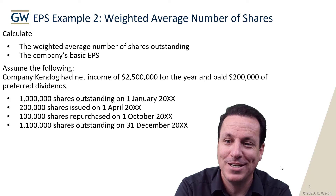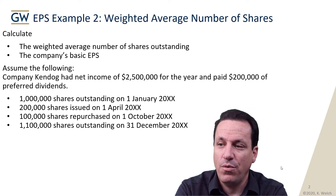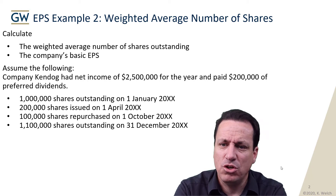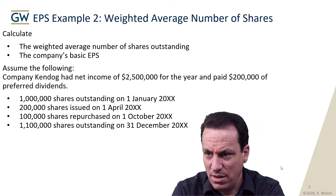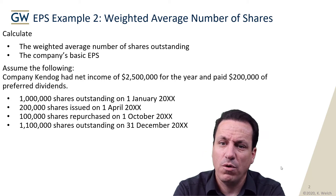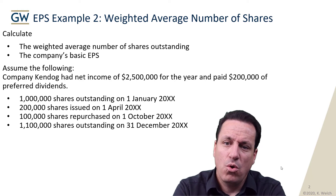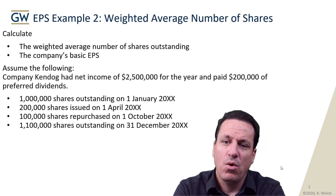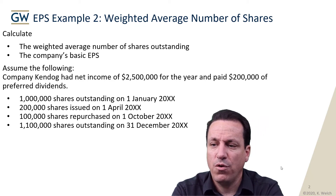Do we include those preferred dividends in earnings or not? We'll get into it. They had shares outstanding on January 1st of some year — we'll assume this is all in the same year. So 1 million shares outstanding at the start of the year, January 1st. Then 200 shares issued on April 1st. Then 1,000 shares purchased on October 1st. And then 1.1 million shares outstanding on December 31st.